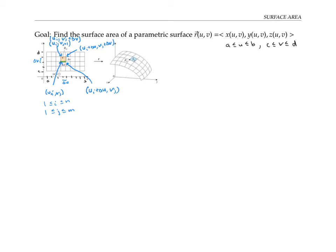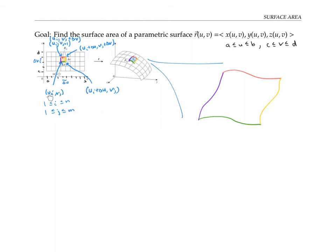Let me color-code the four edges of the sub-rectangle. The parameterization function takes this sub-rectangle to a patch of surface. I'll color each of its edges — note that these edges don't necessarily need to be straight lines anymore; they might be wiggly curves. The four corners of this patch of surface have coordinates r(u_i, v_j), r(u_i, v_j + delta v), r(u_i + delta u, v_j), and r(u_i + delta u, v_j + delta v).